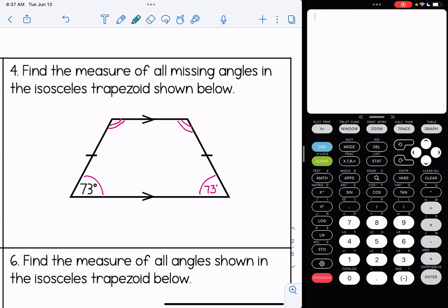So remember our same side interior angles that we talked about before. So here's an example of that. Those add up to 180. So I'm going to subtract 73 from 180. This becomes 107 and same over here.